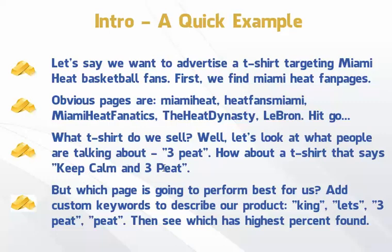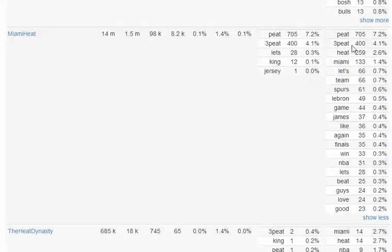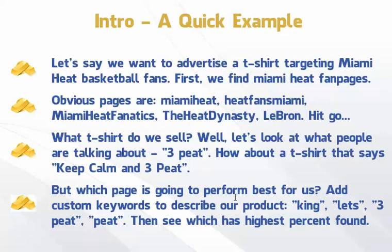By looking at what people are talking about — this phrase 'three-peat' — we can come up with a t-shirt slogan such as 'Keep Calm and Three-Peat,' for example. The reason this phrase is so popular right now is the Miami Heat are about to start playing in the NBA Finals, and if they win it'll be their third title. So if seven percent of all the words used on a page with 14 million people refer to this phrase, it means they're talking about it a huge amount — any ad or product relating to it is going to really take off.